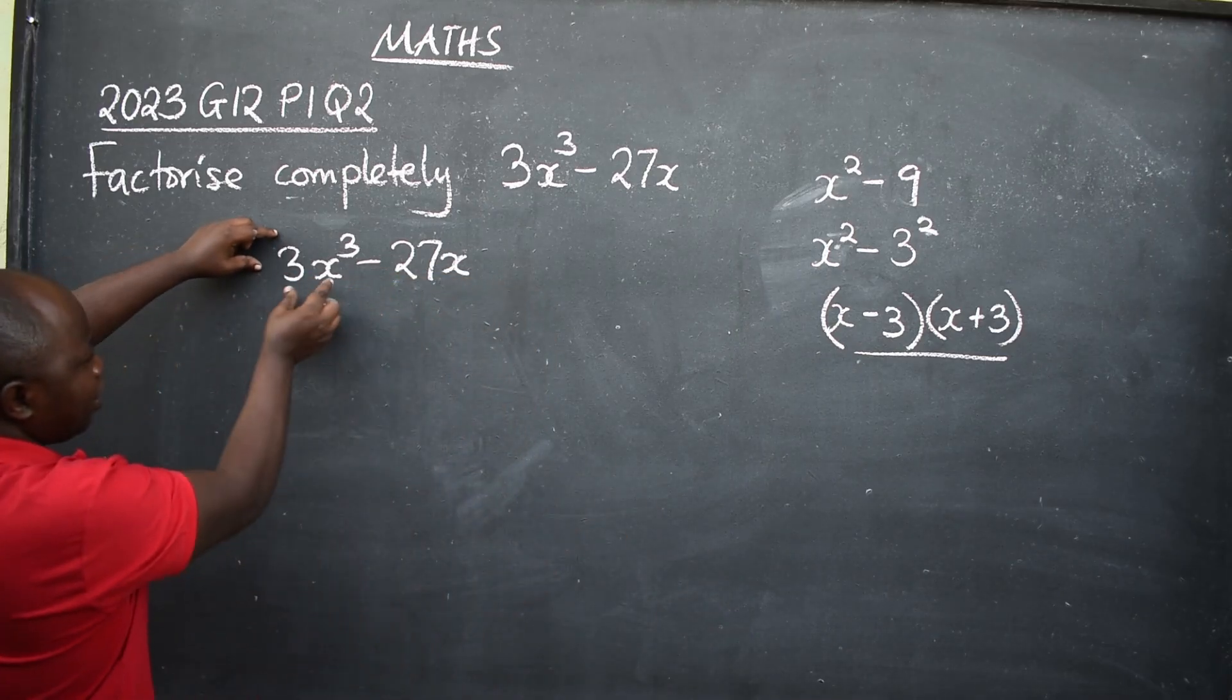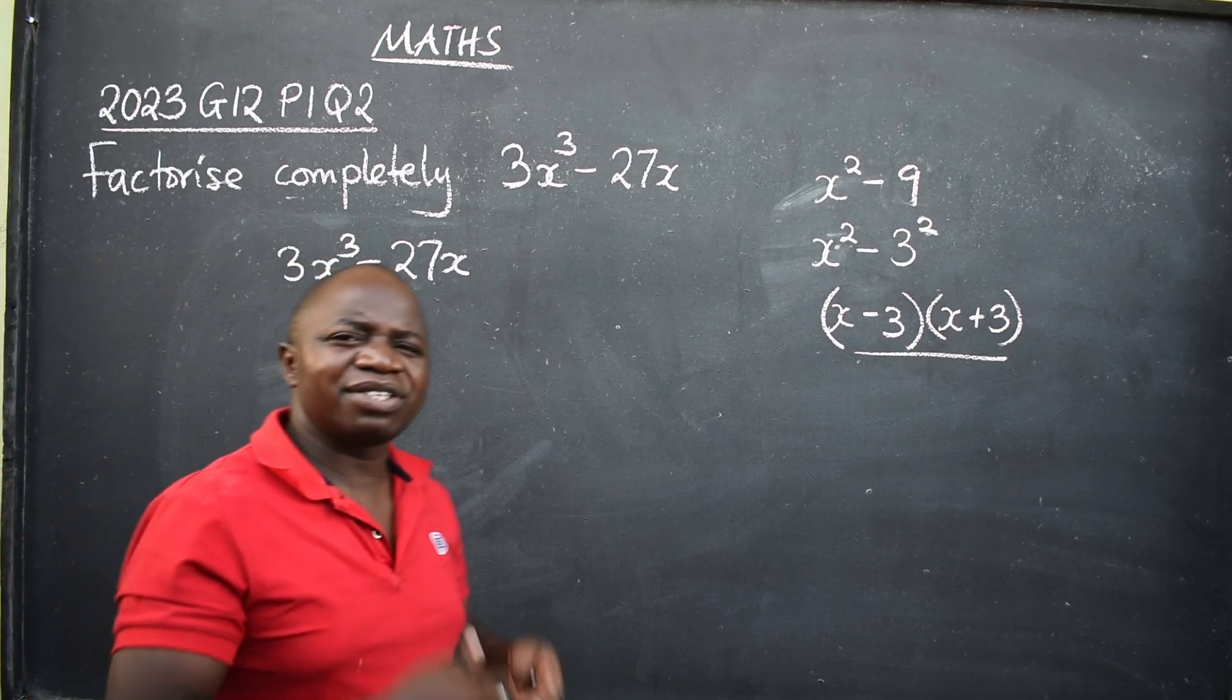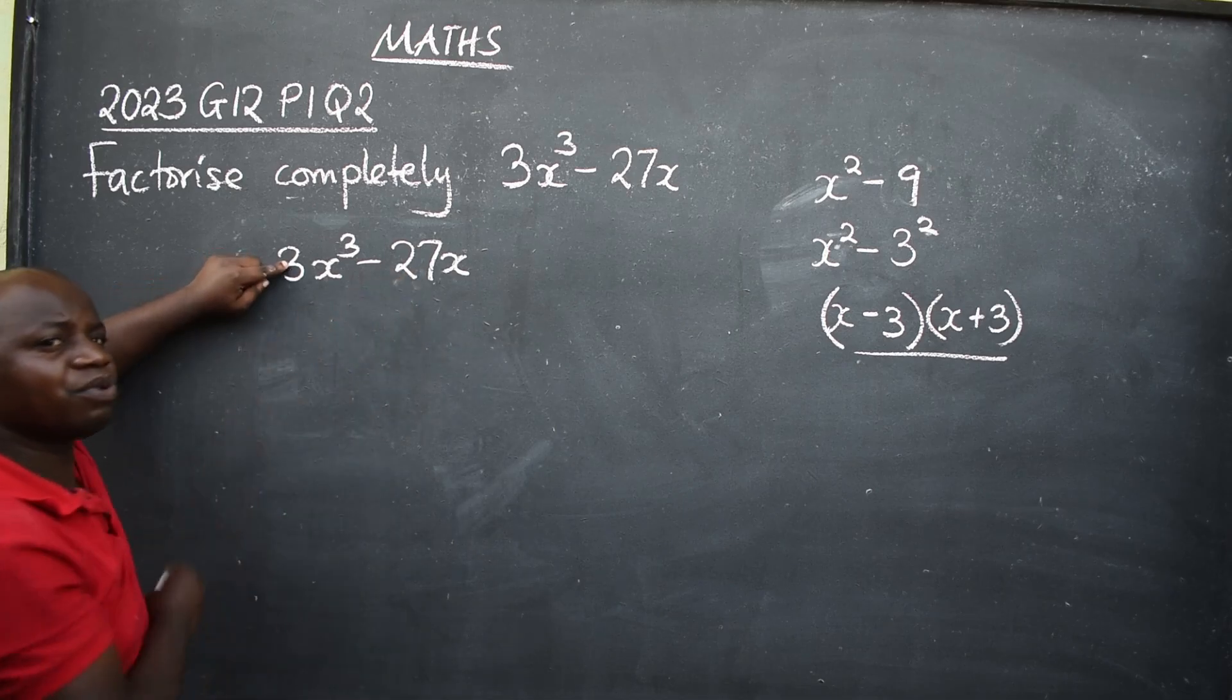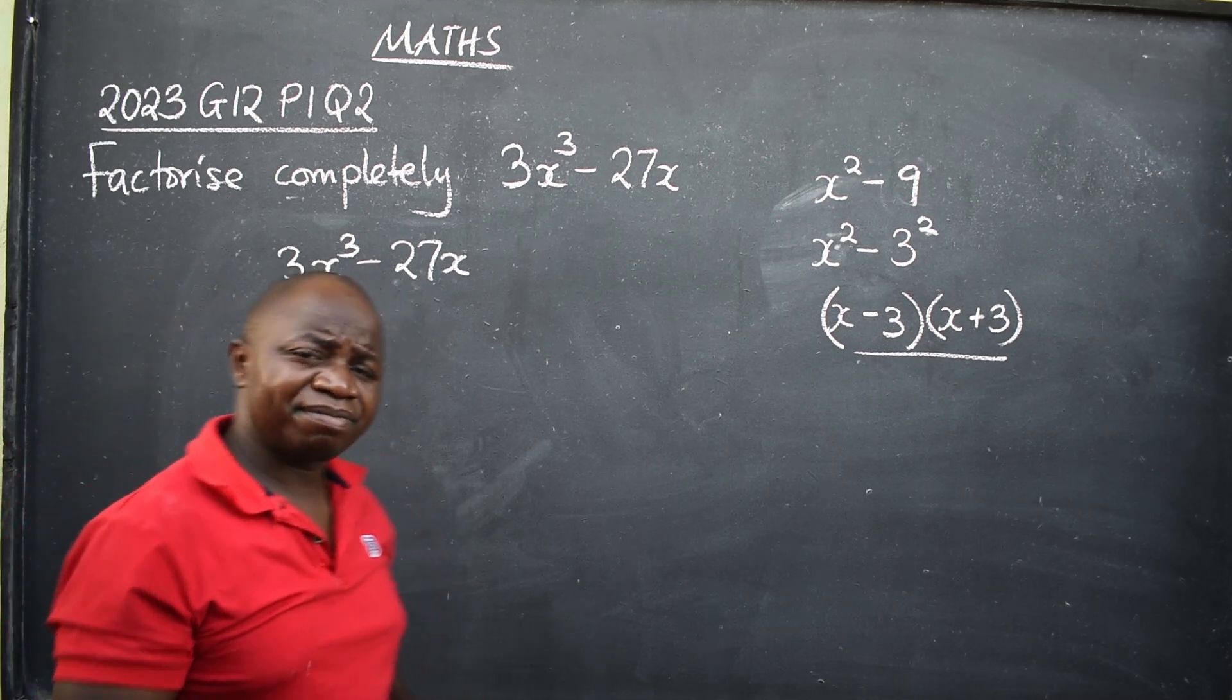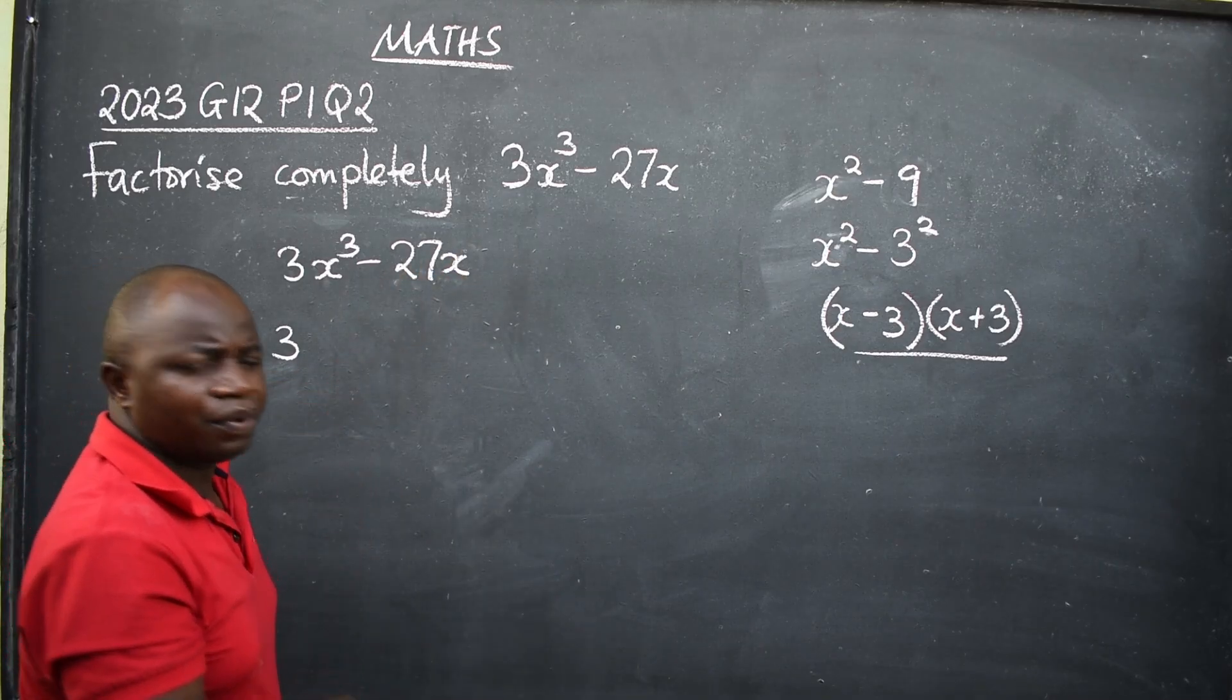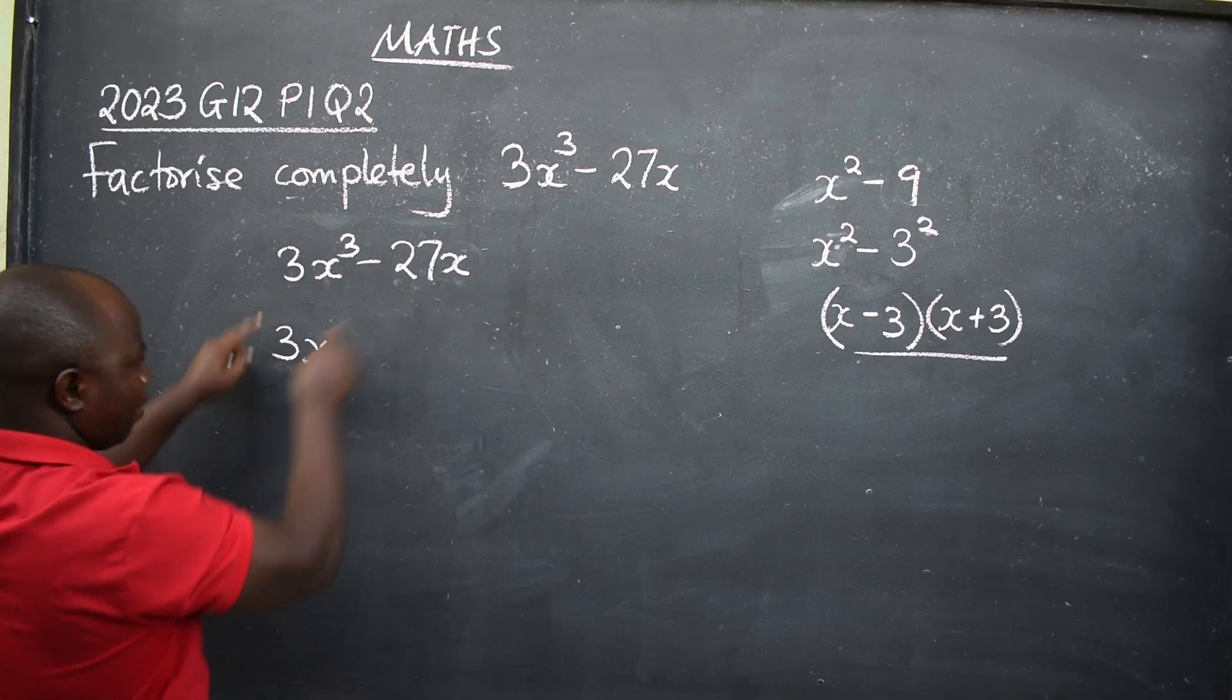They are telling me to perform common factorization first. So common factorization: we look at the two terms that we have. What is common with the numbers? You start with the numbers. Well, 3 is common because it can go into 27. So 3 common. We come to the variables or the letter x. We have x³, we also have x here. You get the lowest degree, which is x. So this is what is common here: 3x.